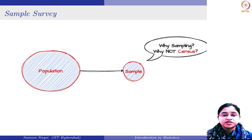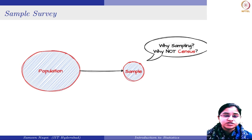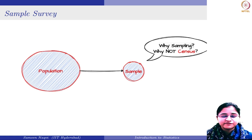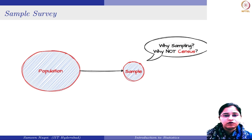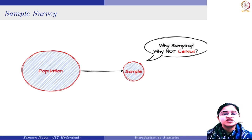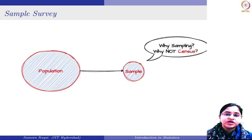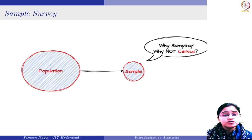Similarly, when you visit a market to purchase groundnuts, you might see individuals randomly pick five or six groundnuts, eat them, and if the quality is good, they place the order. So what they are doing is choosing some observations randomly and then making inferences about the entire population. This is sampling, and it comes very naturally to us.